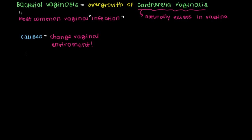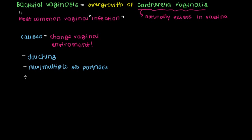That can include acts like douching — so rinsing of the vagina. Another cause is having new or multiple sex partners. And finally, another known cause is the use of antibiotics. This could be in the case of somebody who has a throat infection or pneumonia and is on antibiotics, which will then attack the bacteria that exist within the vagina and allow Gardnerella vaginalis to overgrow and cause bacterial vaginosis.